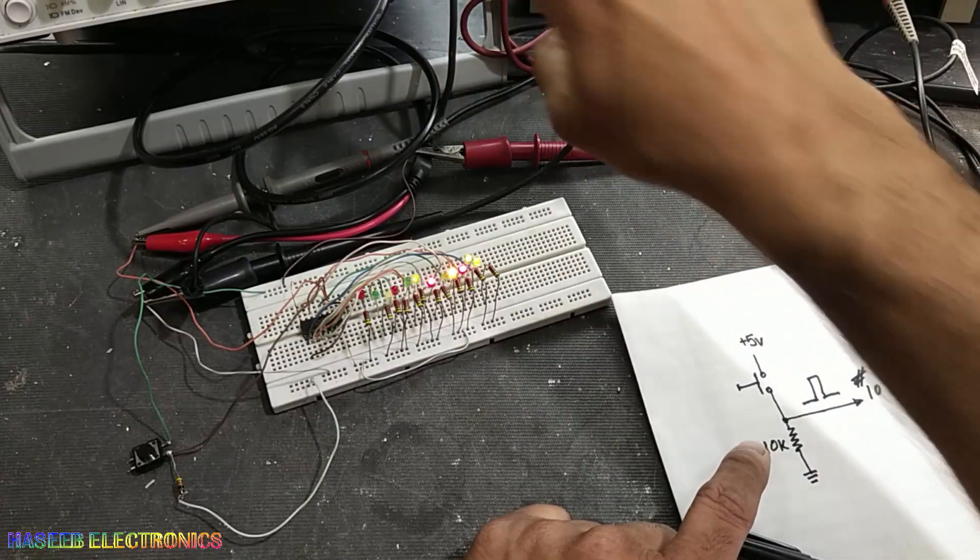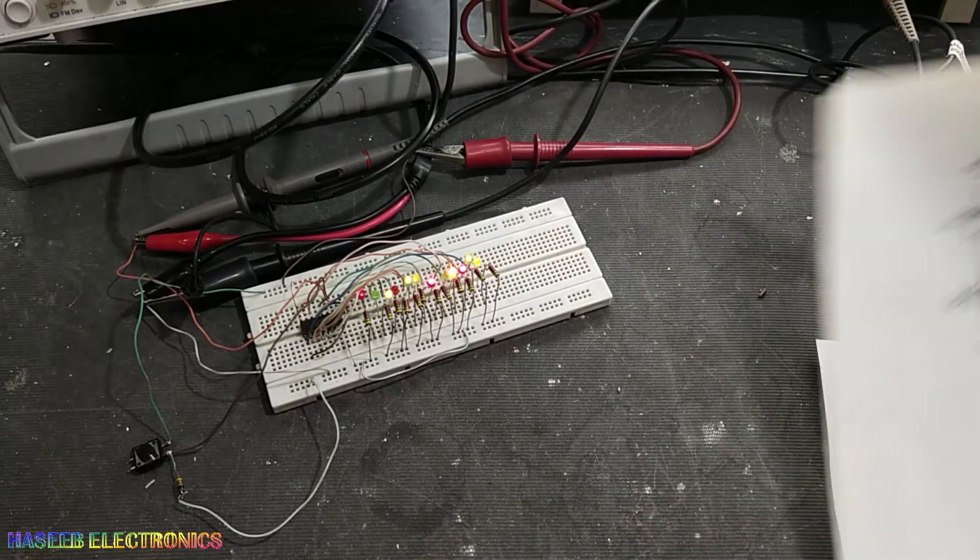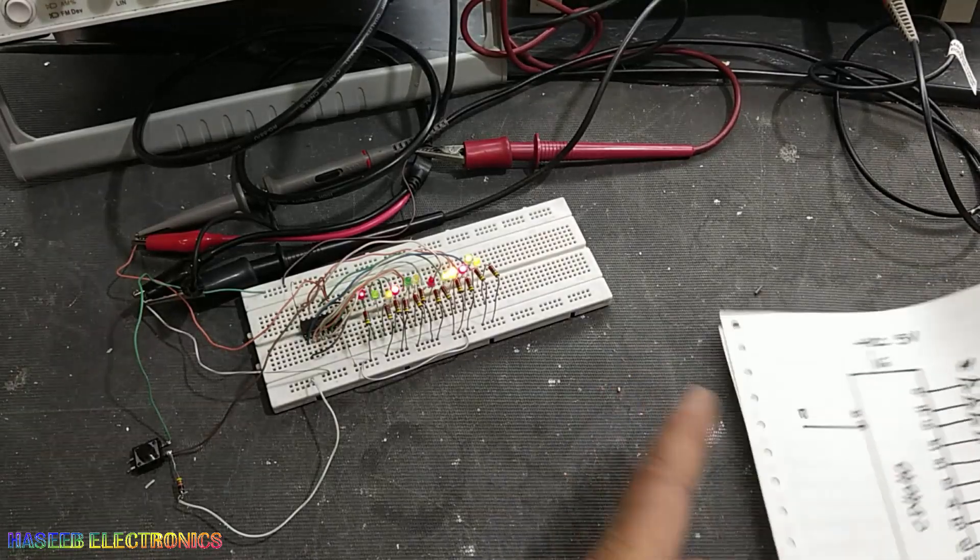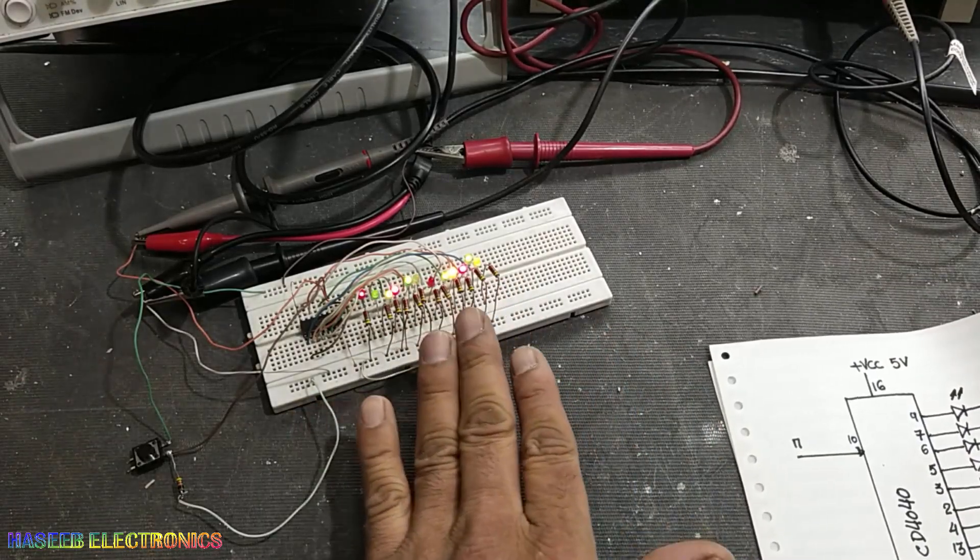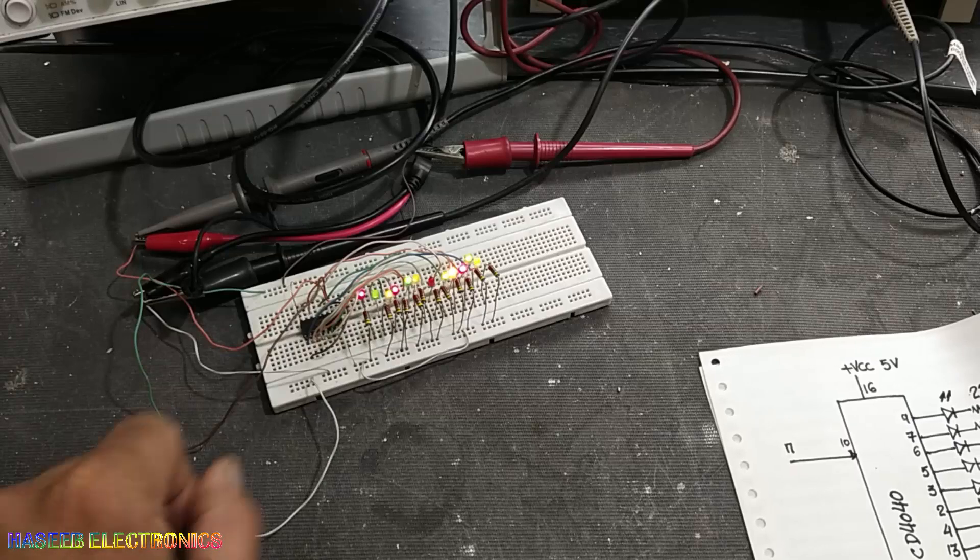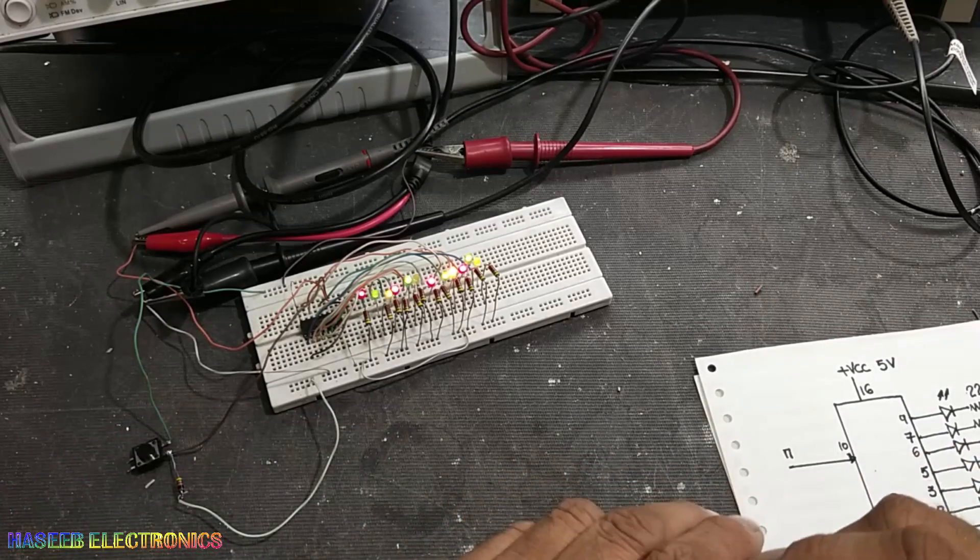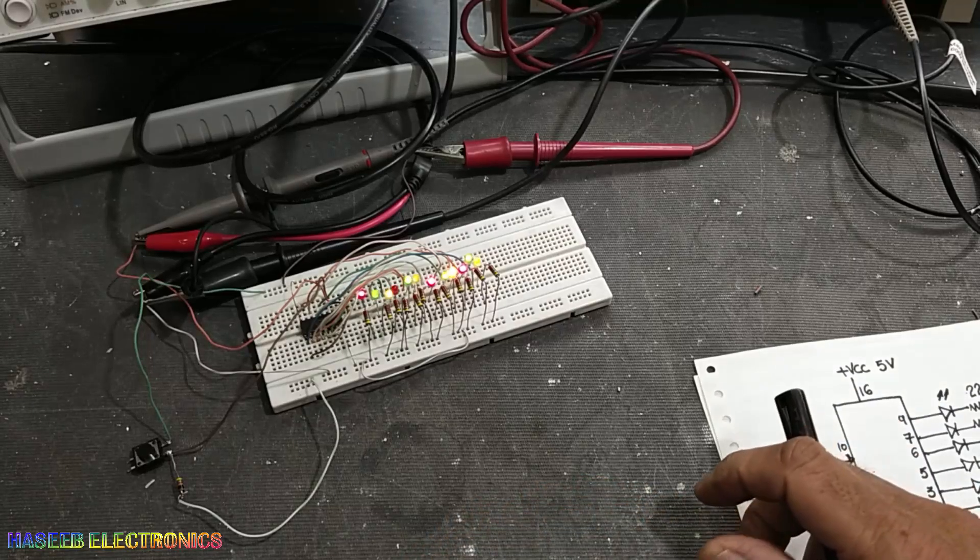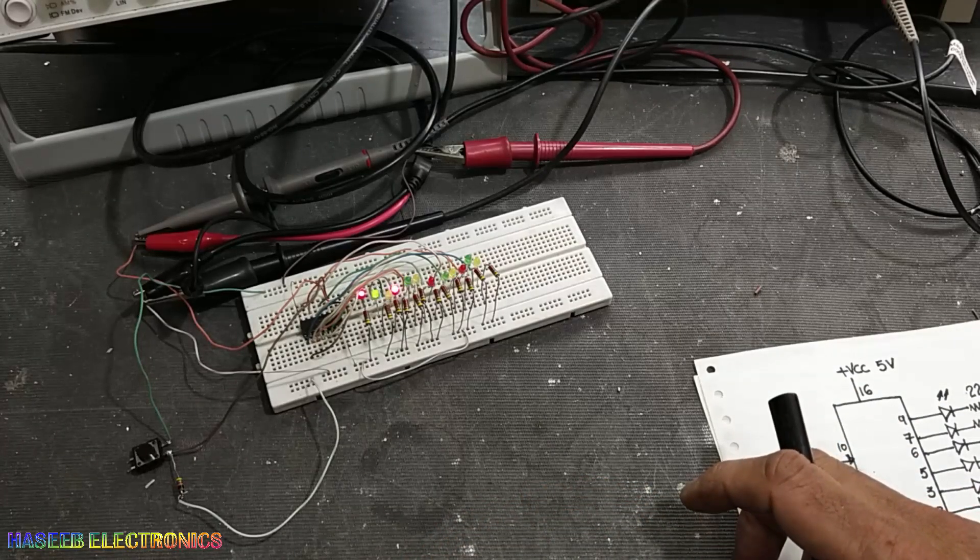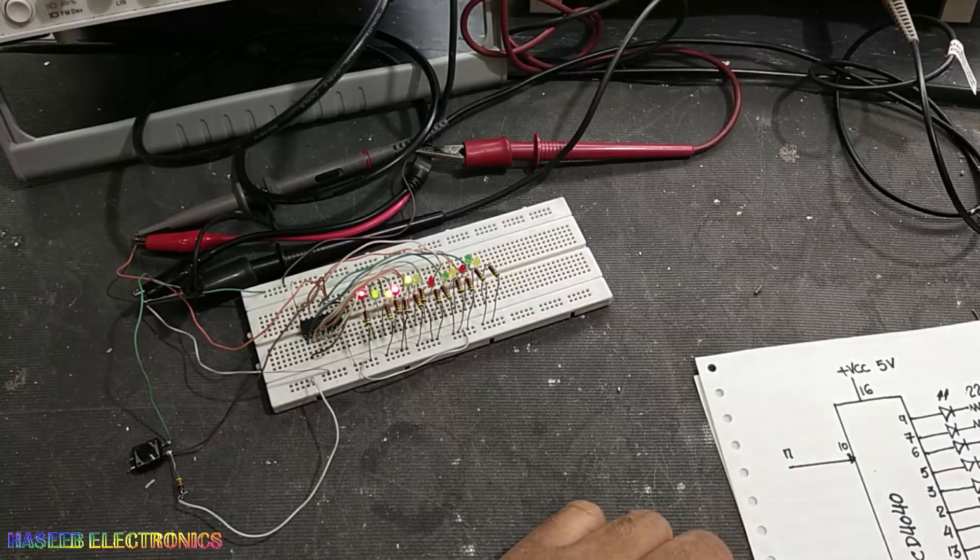We can provide some function generator, some signal generator, and this circuit will work as an automatic counter, or we can use it as a manual counter. I hope this video is informative. If it is informative, hit the like button. If you have any questions, let me know in the comments. Thanks for watching. Assalamualaikum warahmatullahi wabarakatuh.